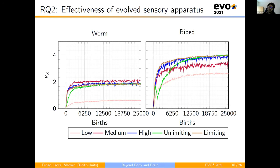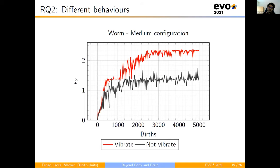These are the results. And even here, we can answer yes. The variable sensory apparatus can find configurations that are able to reach the same fitness as the fixed ones. And this is particularly true for the limiting case where it uses a smaller number of sensors than the high configuration. Moreover, we can see two aspects, one for the worm and one for the biped. For the worm, we can say that the medium configuration seems to be, the red line seems to be slightly better than the other configurations. While for the biped, we see the strange behavior of the unlimited that first increases, then decreases, then increases again.